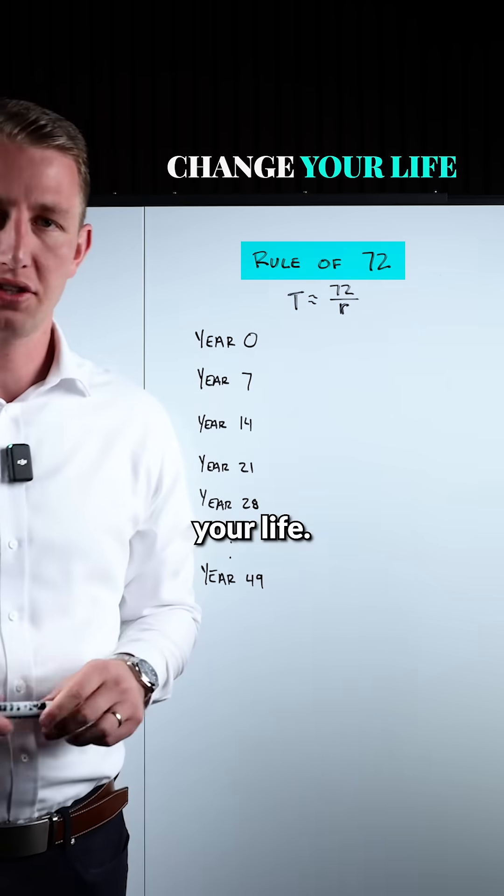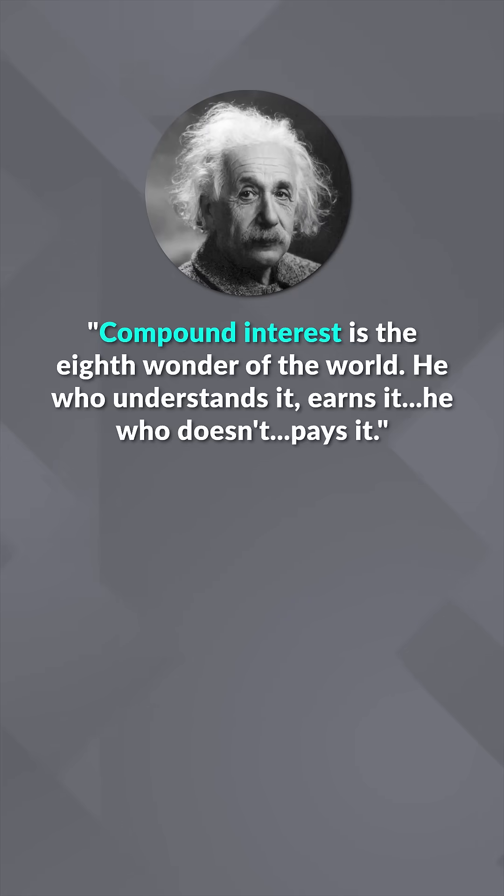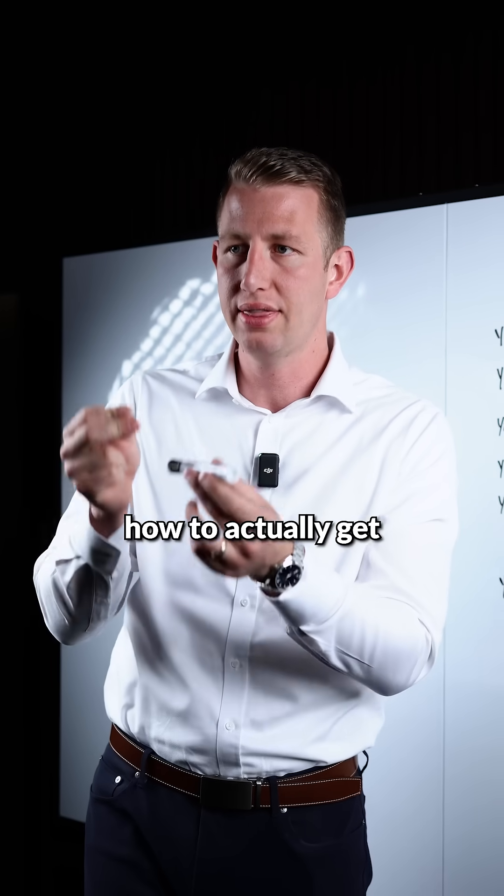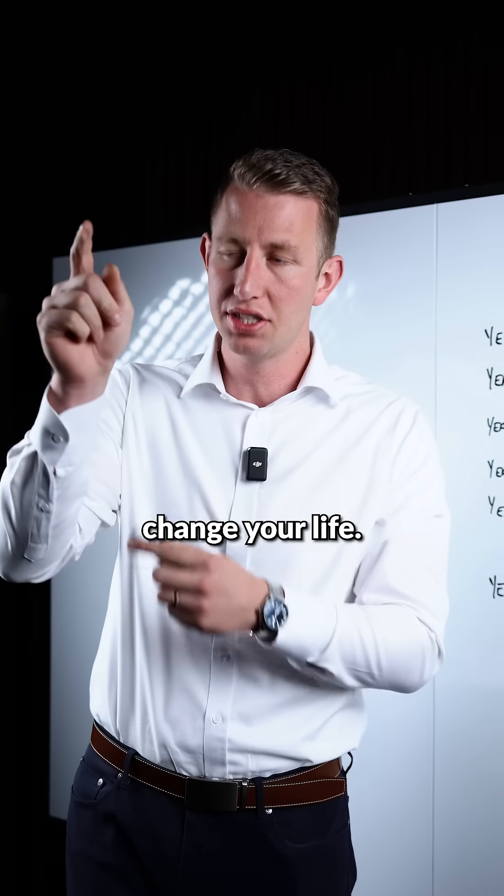The rule of 72 will change your life. Albert Einstein said compound interest is the eighth wonder of the world. He who understands it earns it, who doesn't pays it. Understanding the rule of 72 will show you how to actually get that compound interest and how it can change your life.